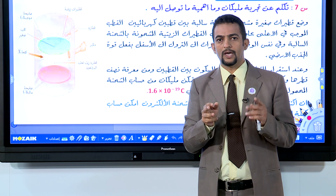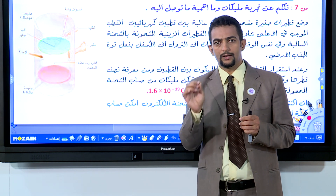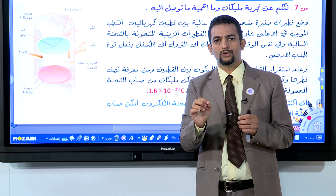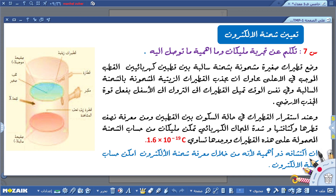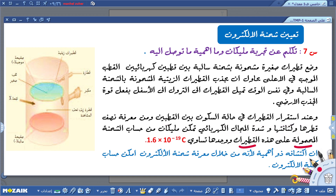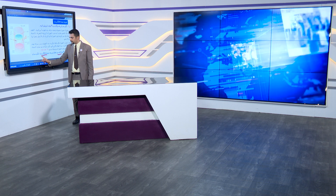قد تحتوي القطيرة على أكثر من شحنة سالبة، لكن العالم ملكان أوجد أصغر كمية لهذه الشحنة، والتي اعتبرناها شحنة الإلكترون. عند استقرار القطيرات في حالة السكون بين القطبين، ومعرفة نصف قطر قطيرة الزيت وكثافتها وشدة المجال الكهربائي، تمكن ملكان من حساب الشحنة المحمولة على هذه القطيرات، وأوجدها 1.6 × 10⁻¹⁹ كولوم، وهي شحنة الإلكترون.